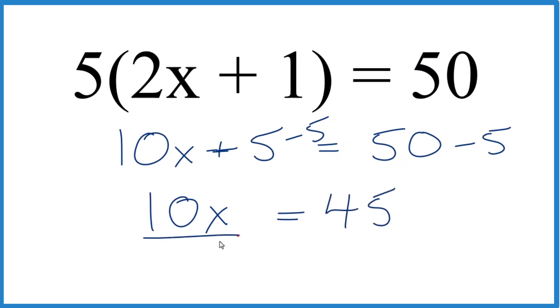So now we can divide both sides by 10 because 10 over 10 is 1. So it's just 1x and we don't write the 1. So here we have our x equals 45 over 10.